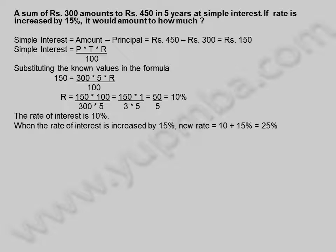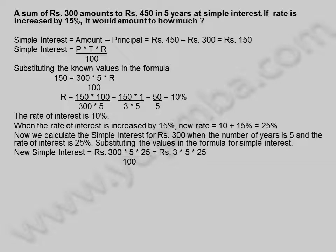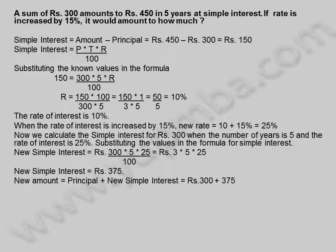Now we calculate the simple interest for 300 rupees when the number of years is 5 and the rate of interest is 25%. Substituting the values in the formula: new simple interest equals 300 into 5 into 25 divided by 100 rupees, which equals 3 into 5 into 25. New simple interest equals 375 rupees.